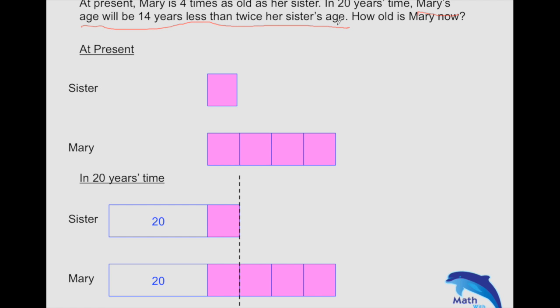Double the sister's age—we'll have another 20 plus one block of pink, that is one unit. This is the sister's age in 20 years time, and we double it. What students need to take note is that we need to draw a longer model because when the sister's age is doubled, it'll be longer than that of Mary's in 20 years time.